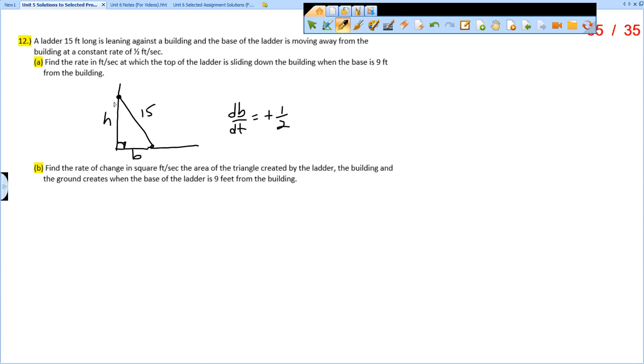Now H is also changing. But remember, the ladder is sliding down the wall, so H is actually getting smaller, so dH/dt is some negative value. But that is what we want to know. Find the rate at which the top of the ladder is sliding down the building.